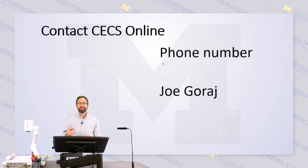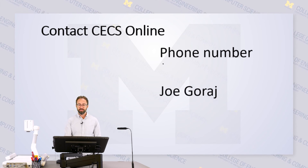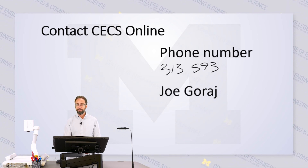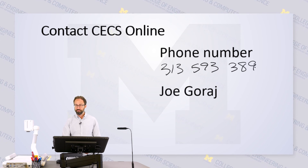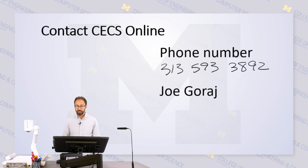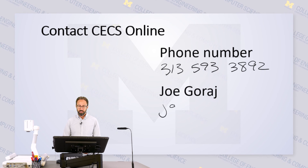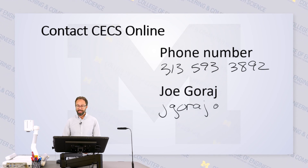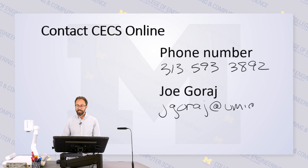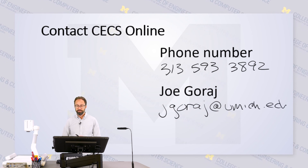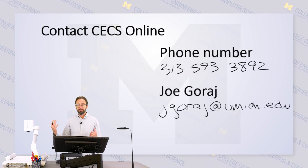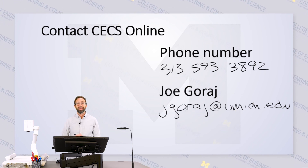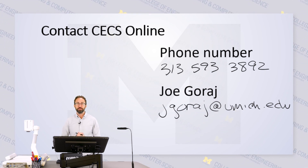So if you wanted to contact CECS Online, you could reach us at 313-593-3892. And if you wanted to reach me directly, I'm at jgoraj@umich.edu. You can see that came up behind me directly on the motion graphics background, and it really adds a lot of visual interest for the students.